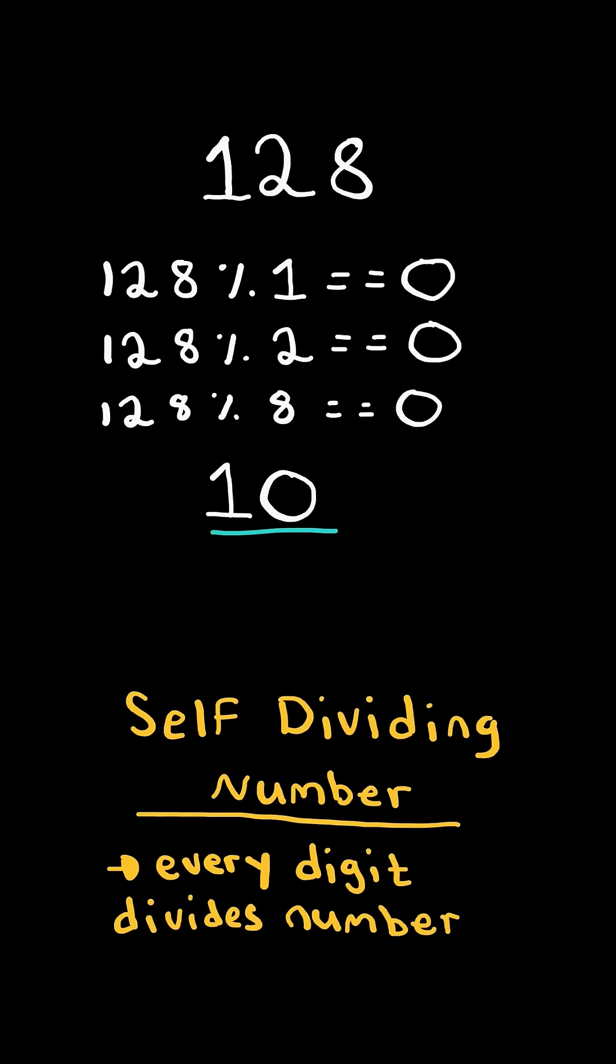Consider this new example: 10. Any number that contains a 0 is not self-dividing because a number cannot be divided by 0.